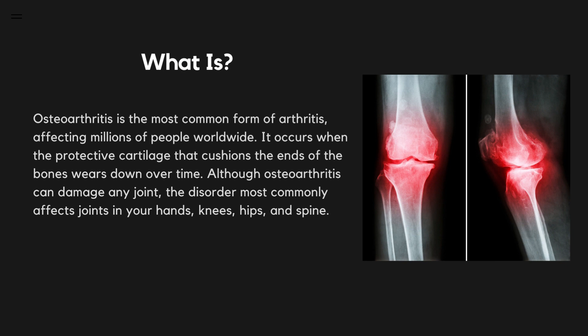Osteoarthritis is the most common form of arthritis, affecting millions of people worldwide. It occurs when the protective cartilage that cushions the ends of the bones wears down over time. Although osteoarthritis can damage any joint, the disorder most commonly affects joints in your hands, knees, hips, and spine.